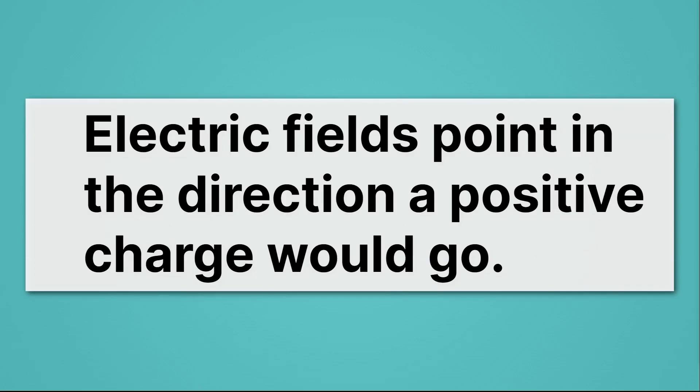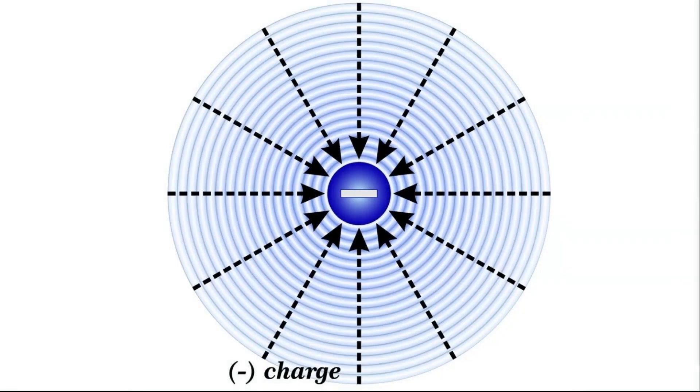That means that electric fields point in the direction a positive charge would go. Let's think about that. Here we have our negatively charged particle again. And imagine putting a positively charged particle anywhere on the screen. It's going to rush towards that negative charge because opposites attract. And so those arrows are telling us the direction a positive charge would go.